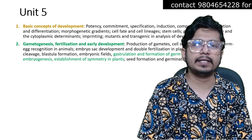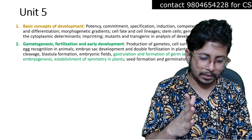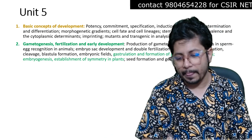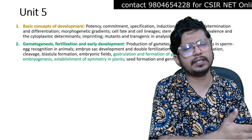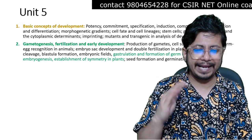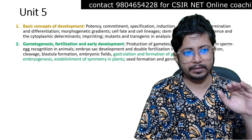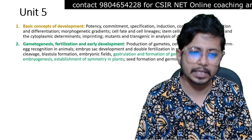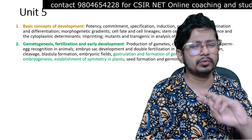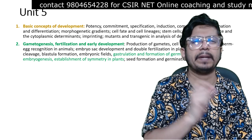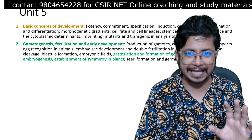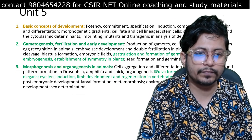Unit 5 is developmental biology covering both animals and plants. Looking at past year questions, about 80% of questions are from animal development and 20% from plant development. For plant development, there are only two or three things you need to study for Unit 5 - the rest is animal development you need to focus on.